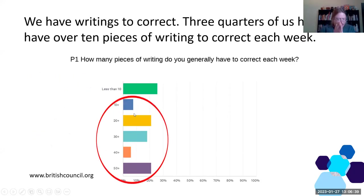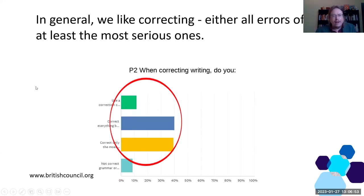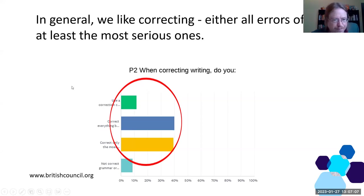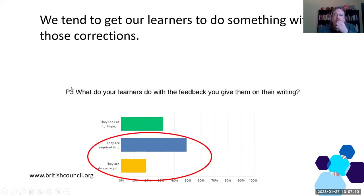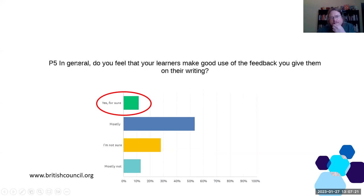Situation: most of us, according to the survey — this is information that you guys gave me — most of us have writings to correct. The vast majority of people who filled in the survey have more than ten. In general, we like correcting. We either use a correction code, or we correct everything with little notes, or we correct the most important things. We try, the majority of us, to get our students to do something with the corrections we give them to their writings. But maybe we're not entirely certain that they're making the best use — only a small percentage there.